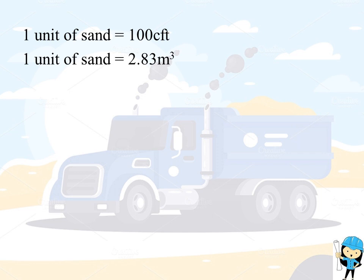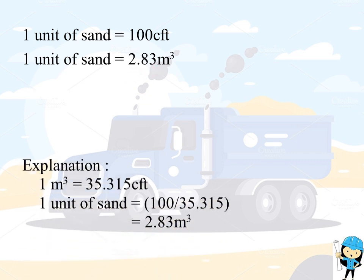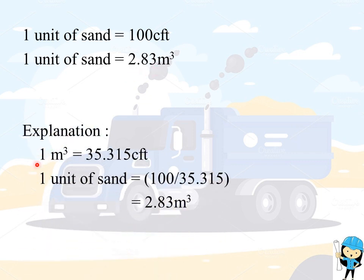We know that 1 unit of sand is equal to 100 CFT, which is also equal to 2.83 meter cube. The explanation is: 1 meter cube is equal to 35.315 CFT. Therefore, 1 unit of sand is equal to 100 divided by 35.315, which gives 2.83 meter cube.